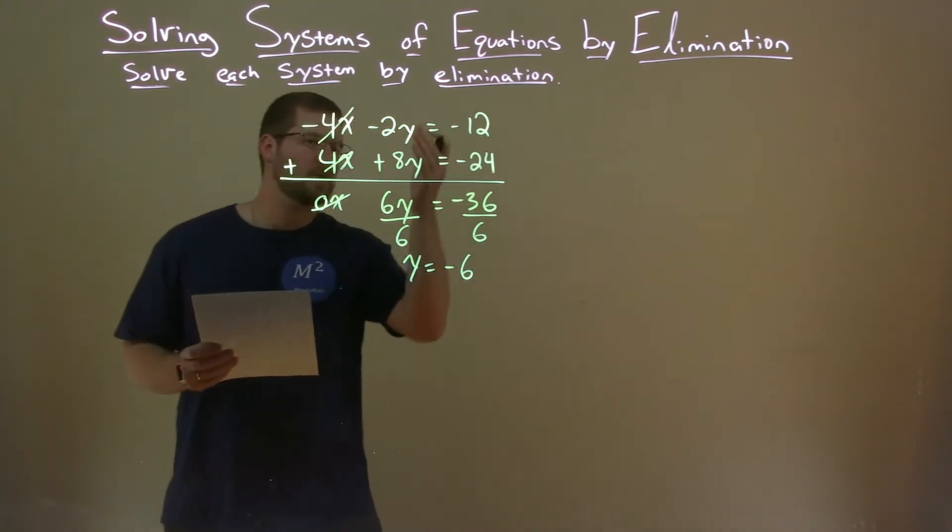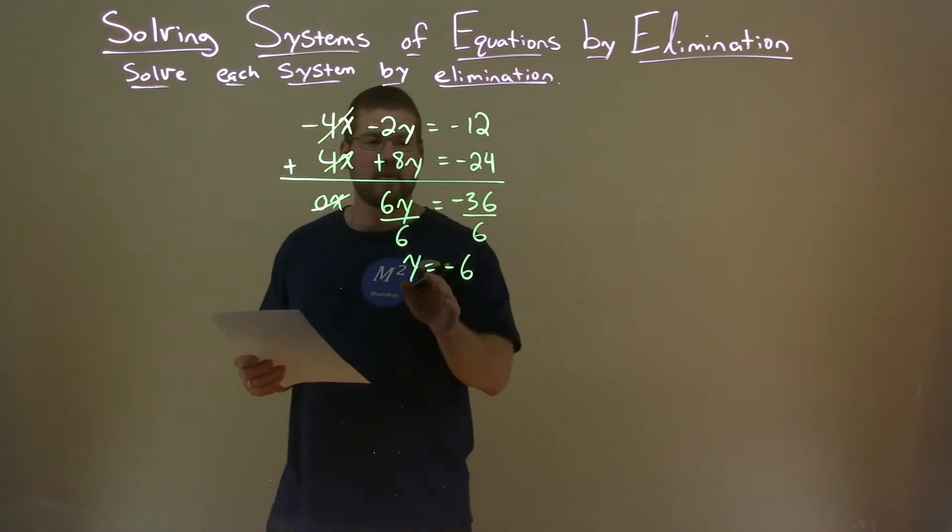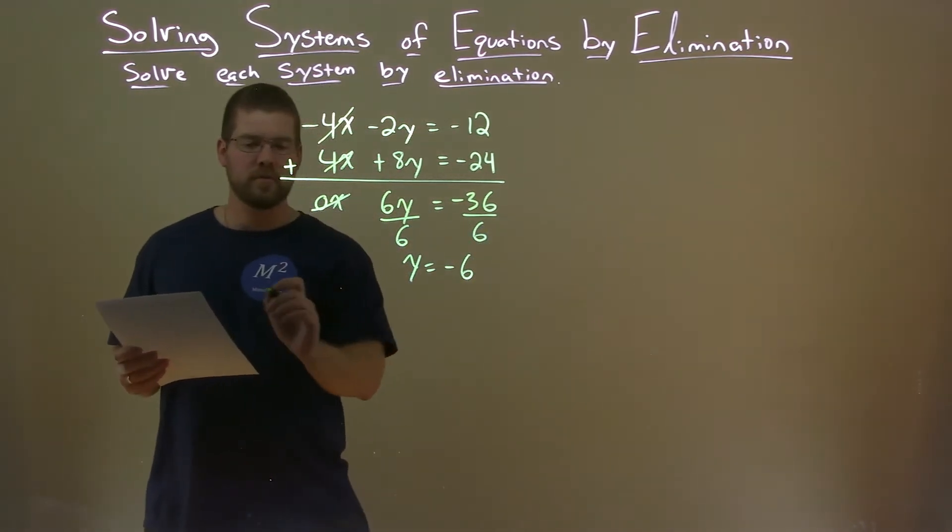So we take a look at our original equations, and we pick one of them to substitute negative 6 in for y. So let's go with the first one, negative 4x minus 2y, and y being negative 6 here, equals negative 12.